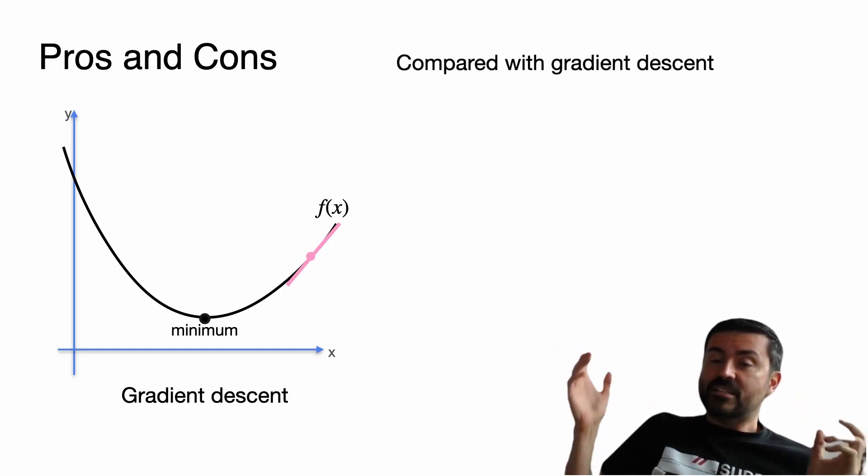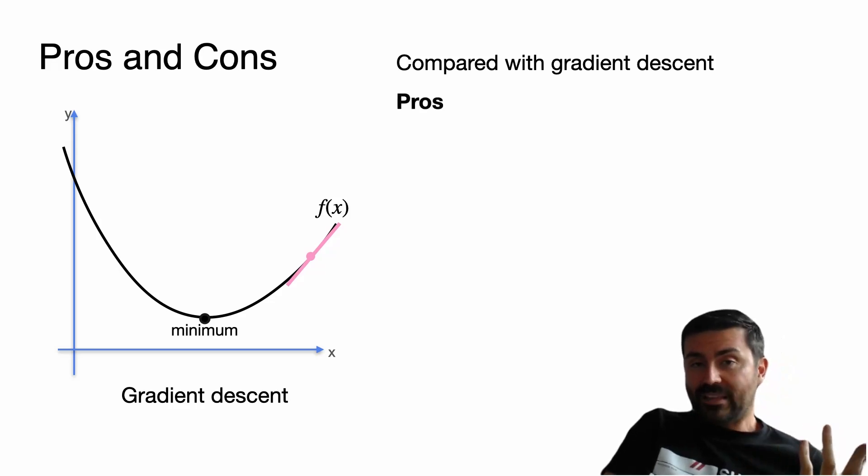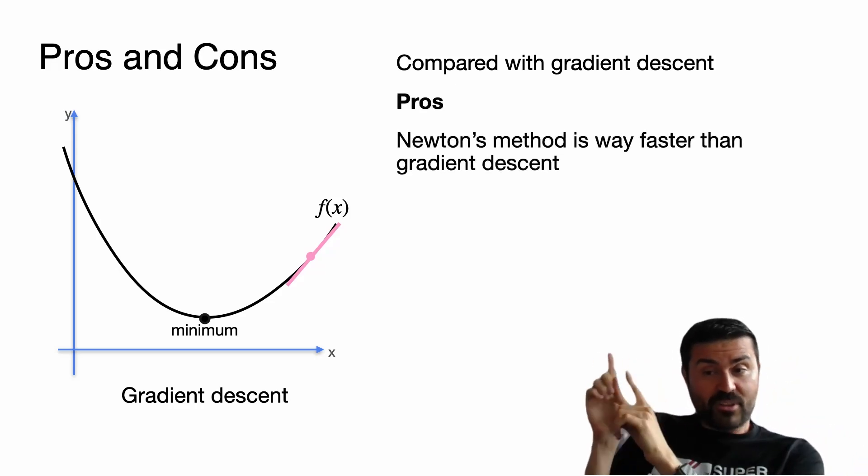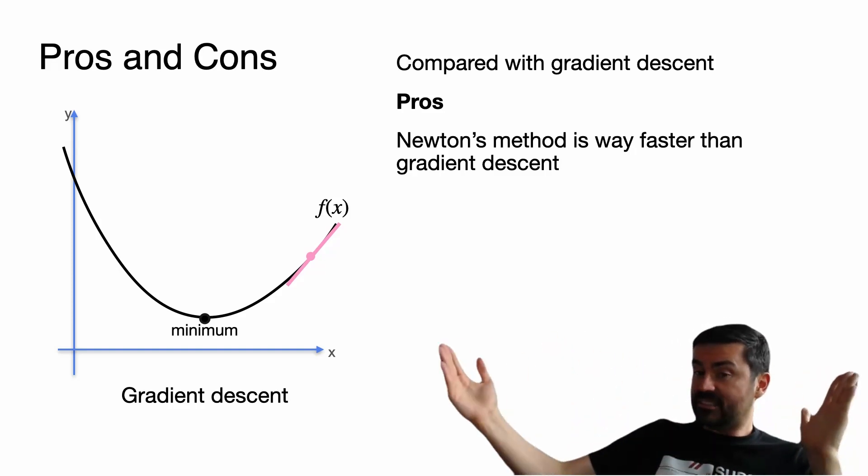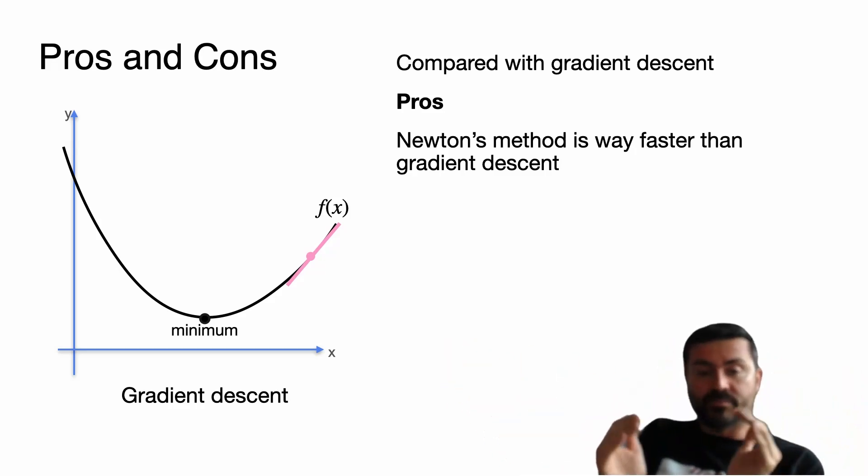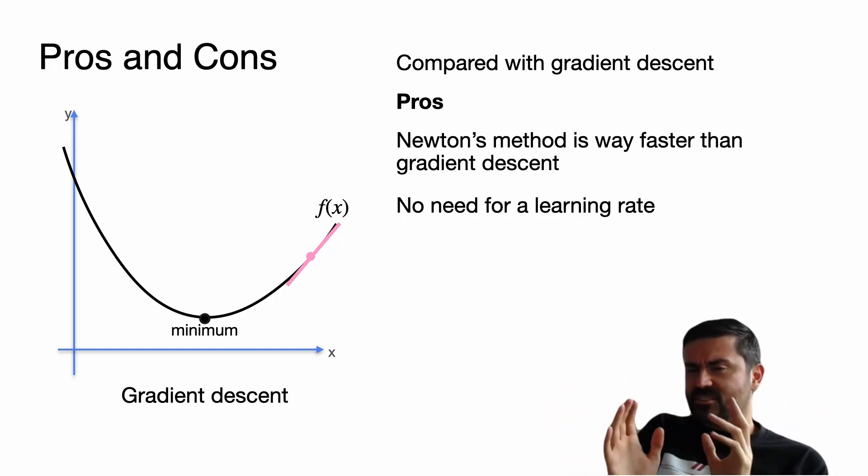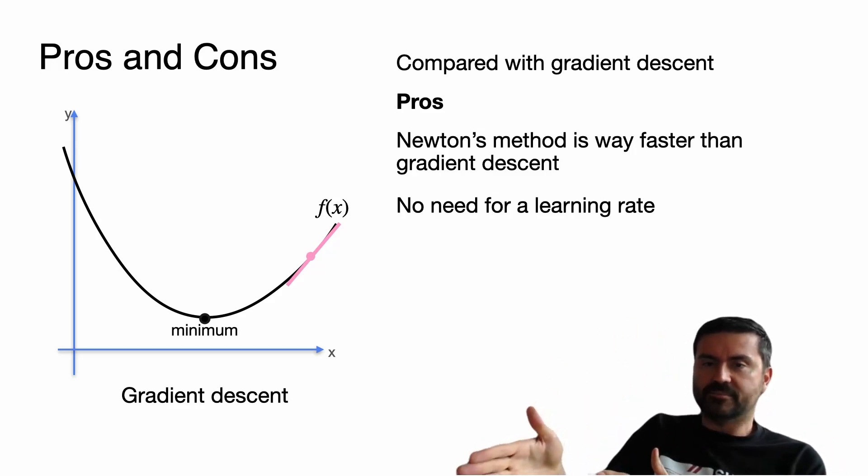So when compared to gradient descent, Newton's method has some pros and some cons. What are the pros? Well it's much faster. As you can see we got really close to that root very quickly. So Newton's method is definitely faster than gradient descent. Gradient descent may need a lot of steps. Newton's method may just need a few. And we don't need to specify a learning rate, because in gradient descent you need to specify a learning rate, and if it's too big or too small you may not solve the problem well. So you need to be smart about it. Newton's method you don't need to think about a learning rate. You just apply it. So those are the pros.